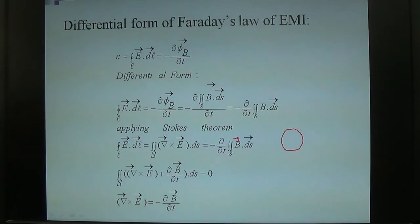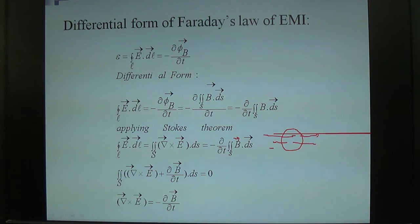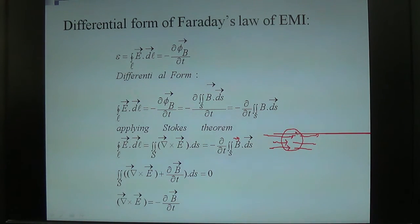Now, in this circular coil through which the magnetic field passes, what is constant? The area of the coil is constant, and B is variable. So the differentiation of B with respect to time gives us the time-varying magnetic field.